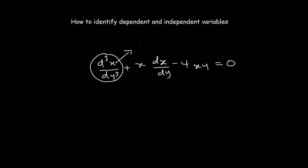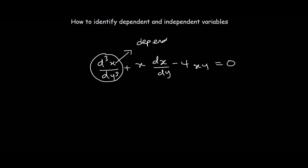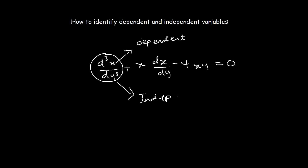The variable on top will be the dependent variable, and then the variable on the bottom will be the independent variable. So this is easy to identify the dependent and the independent variables.